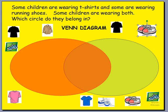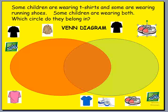Now the question is, some children are wearing t-shirts, and some are wearing running shoes. So in your classroom you're going to have children that are wearing t-shirts, and others that are wearing running shoes. But you'll also have a couple of children in the class who are wearing both the t-shirt and the running shoes. So where do we put them?